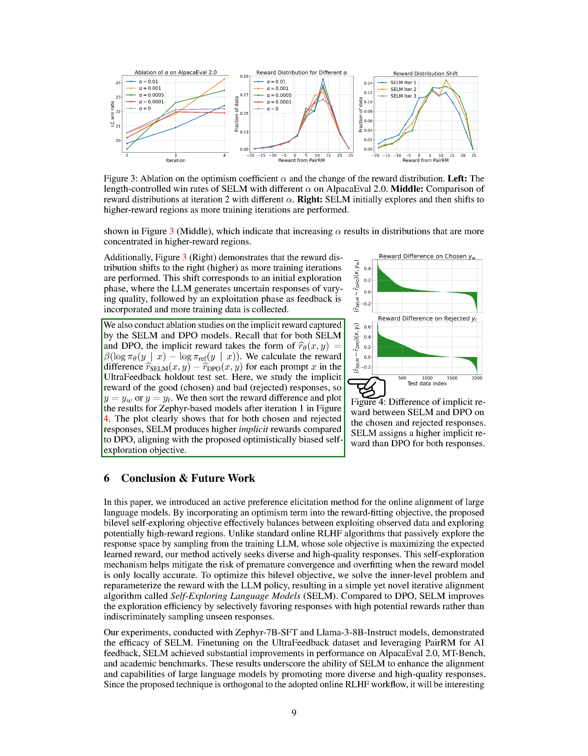We also investigated the implicit reward captured by the SELM and DPO models. The implicit reward is represented as r̂_θ(x,y) = β log π_θ(y|x) - log π_ref(y|x) for both models. By calculating the reward difference r̂_SELM(x,y) - r̂_DPO(x,y) for each prompt x in the ultrafeedback holdout test set, we compare the implicit rewards of good (chosen) and bad (rejected) responses. Sorting the reward differences revealed that SELM produces higher implicit rewards for both chosen and rejected responses compared to DPO, supporting the optimistically biased self-exploration objective proposed in our study.